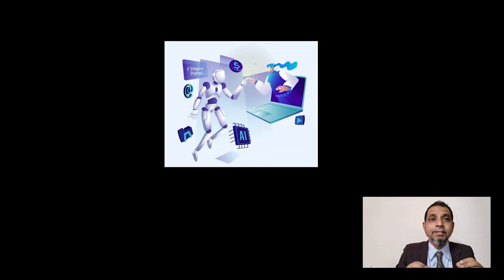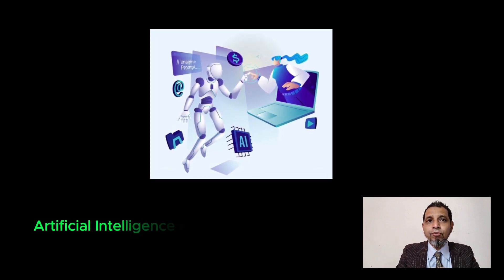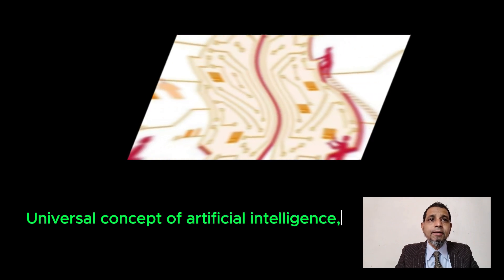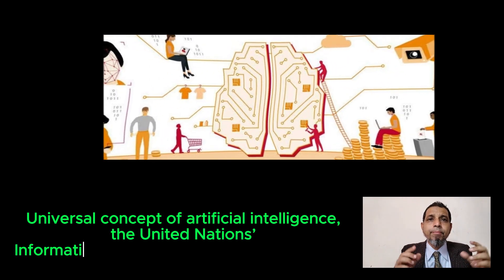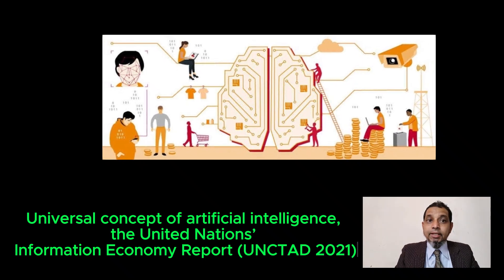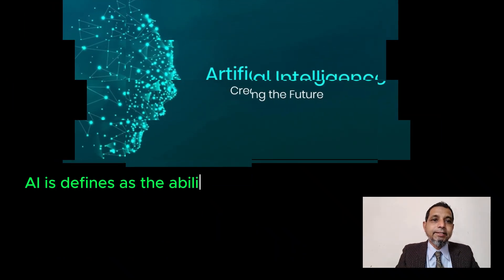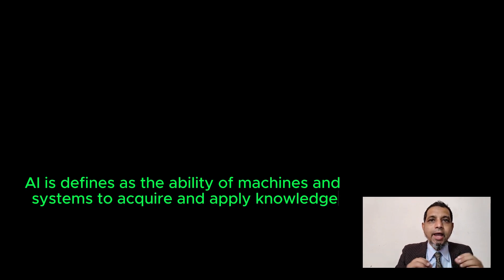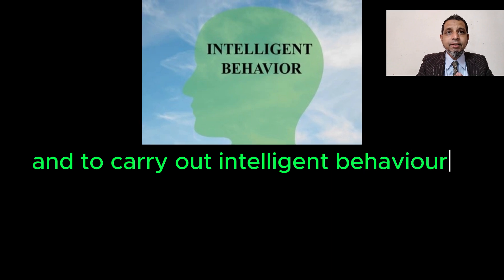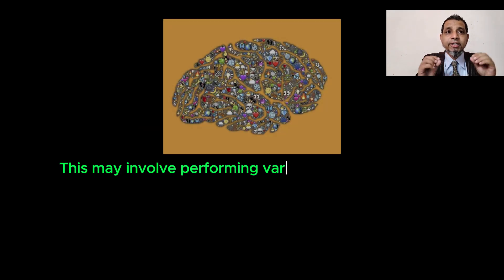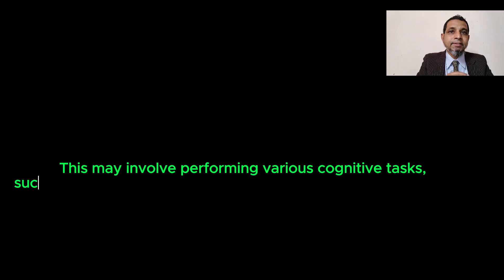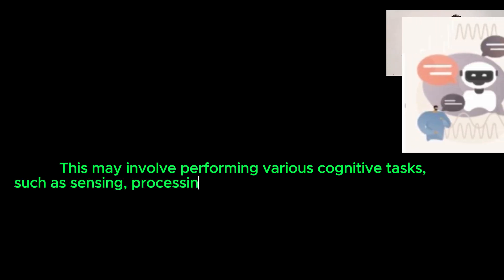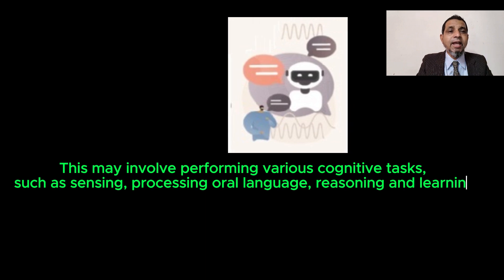There is no proper definition of artificial intelligence that is acceptable to all domains of knowledge — it is an umbrella term. The universal concept of artificial intelligence was presented by the United Nations Information Economy Report in 2021. The report says: artificial intelligence is the ability of machines and systems to acquire and apply knowledge and to carry out intelligent behavior. This may involve performing various cognitive tasks such as sensing, processing oral or natural language, reasoning, and learning.